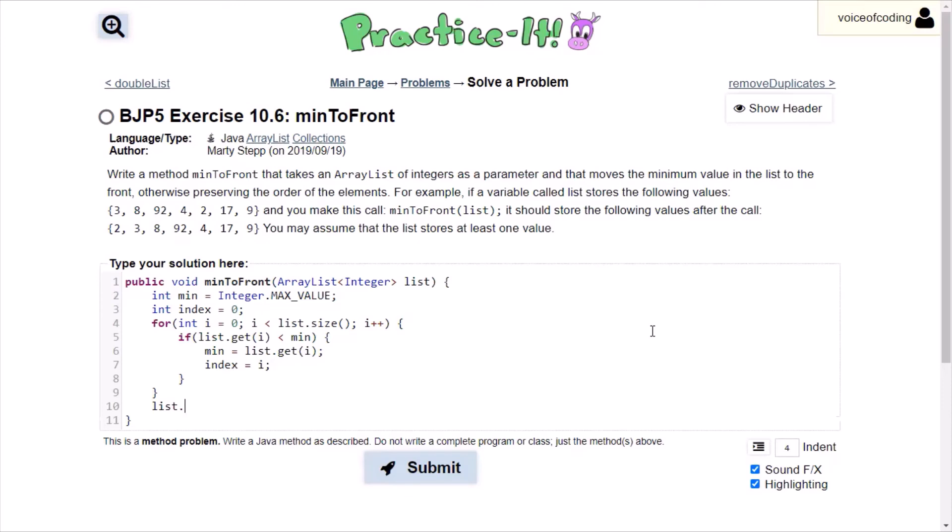So we're going to list.add(0) because it's the start of the list. And then we're going to remove our value. We will be removing the value at the index. And that should be it.